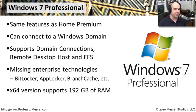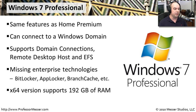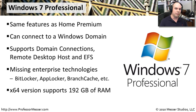Windows 7 Professional supports both 32-bit and 64-bit versions, and you can have up to 192GB of RAM — really taking advantage of a lot of hardware. But there are still some features missing that we can fill in by looking at Windows 7 Ultimate.